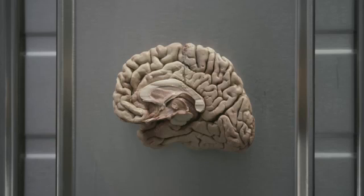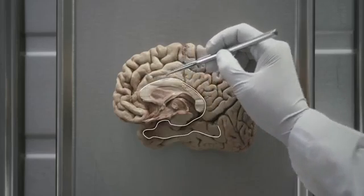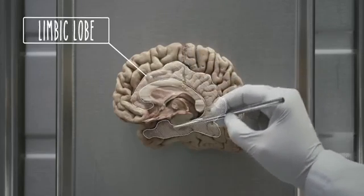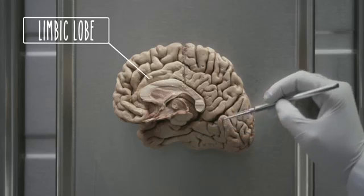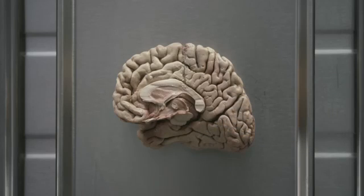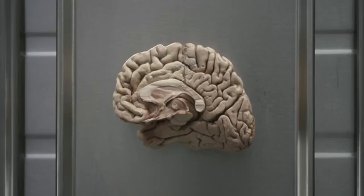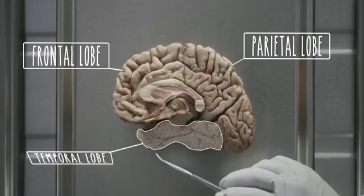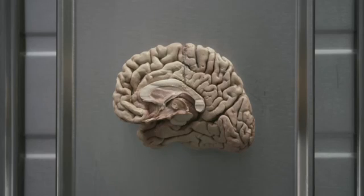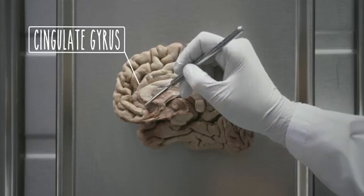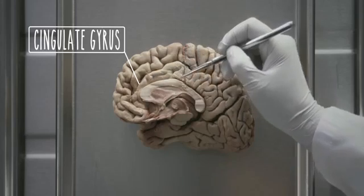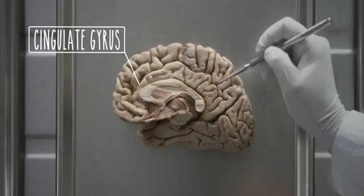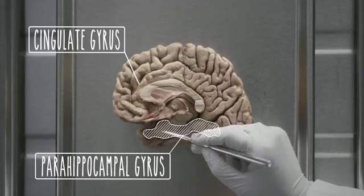These structures include deep forebrain nuclei and cortical areas. The key cortical area is the limbic lobe. It is not a true lobe; rather it spans the frontal, parietal, and temporal lobes. It comprises a ring of cortex on the medial surface of the brain, including the cingulate gyrus and the parahippocampal gyrus.